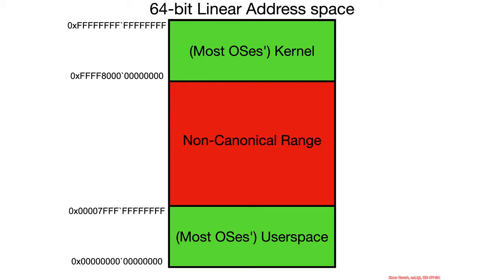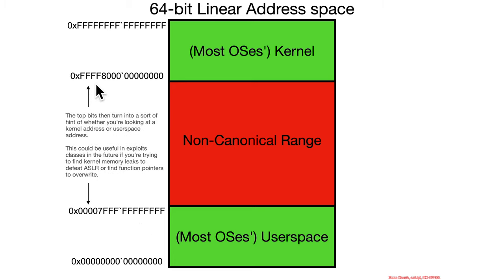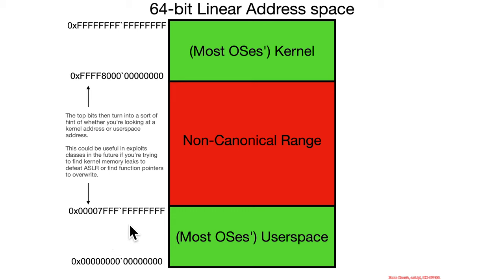The key takeaway from canonical addresses is that most operating systems place the kernel in the high range and place user space in the low range. Consequently, if you just look at the top bits of an address — if it's F — you can generally say that is a kernel address or kernel pointer. If the top bits are all zeros, then for most operating systems that is expected to be a user space address.